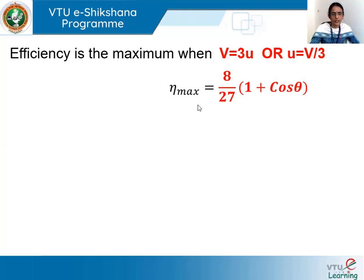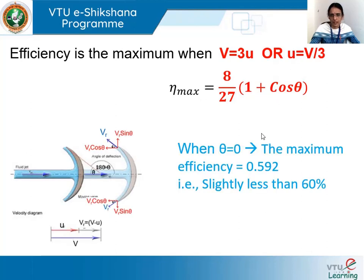For that case, efficiency is maximum when the jet velocity is three times the vane velocity, i.e., u = v/3, giving maximum efficiency of (8/27)(1+cosθ). This is maximum when θ = 0° (cosθ = 1), giving a maximum efficiency limited to 59.2%, which is relatively low compared to practical applications.